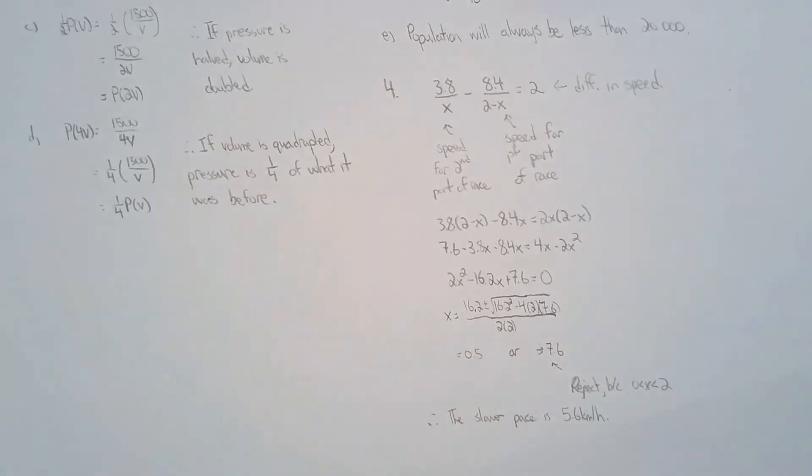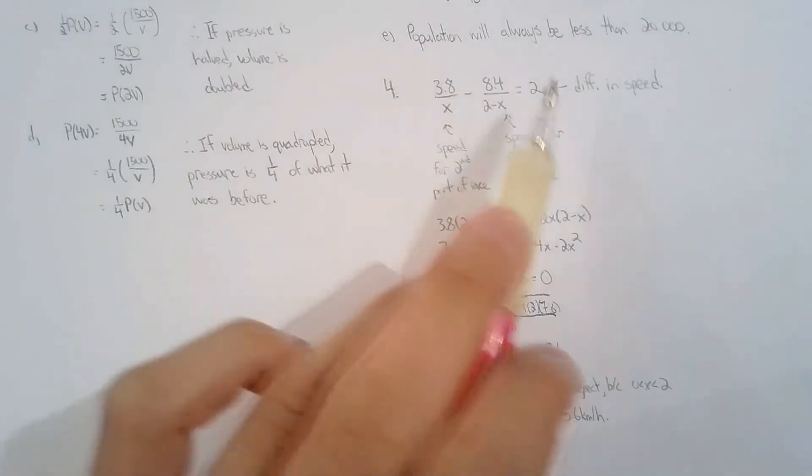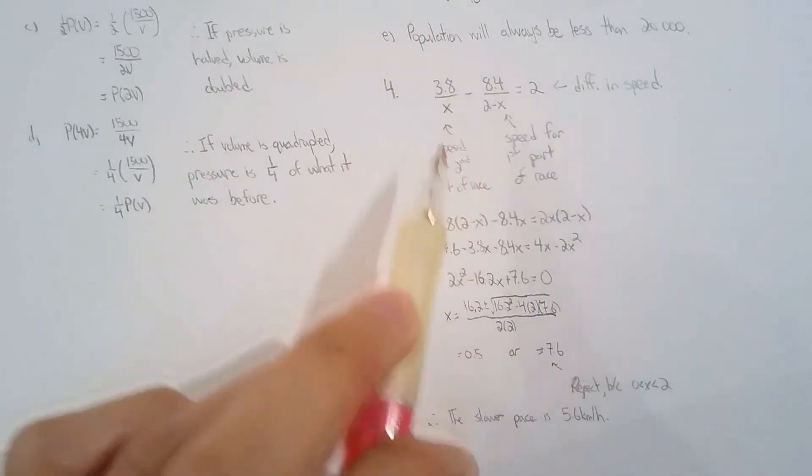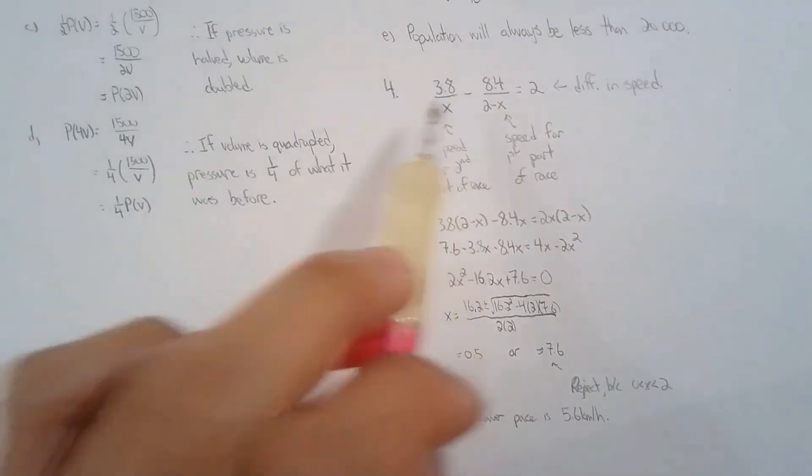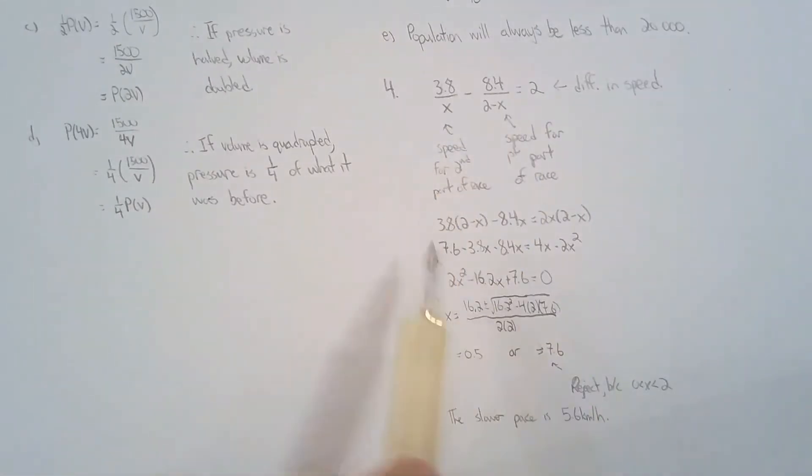You have to reject because x is between zero and two based on the way I designated my variables, so the slower pace is 5.6 kilometers per hour. Once you finish building the equation correctly, the rest is really straightforward. Once you clear the denominators you have a quadratic equation. At the very worst you use the quadratic formula—that's the worst case scenario.